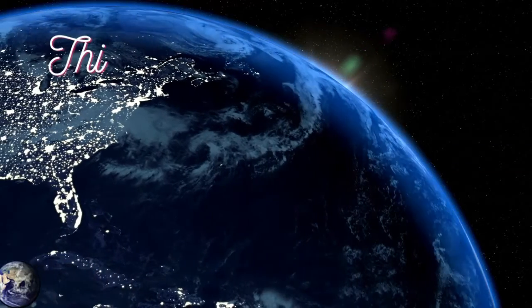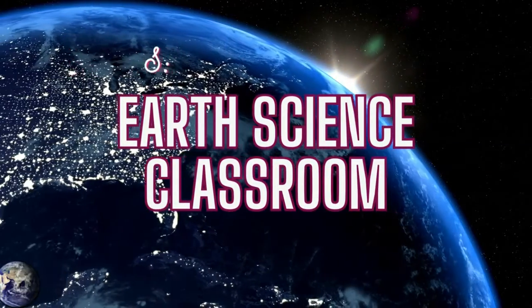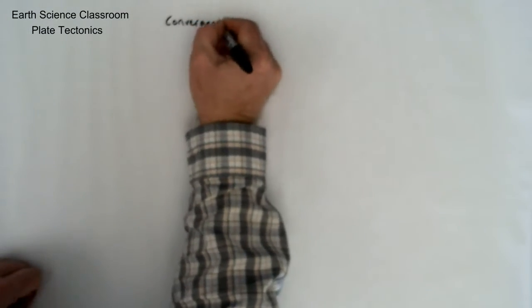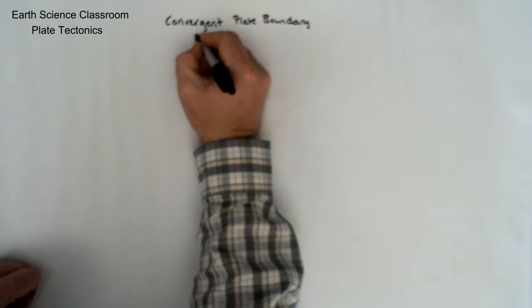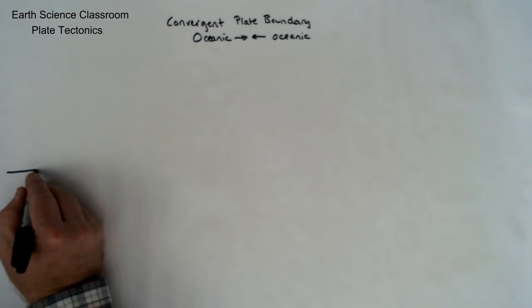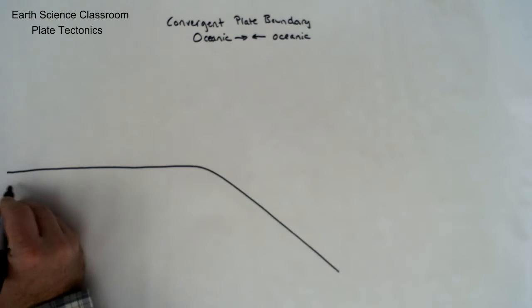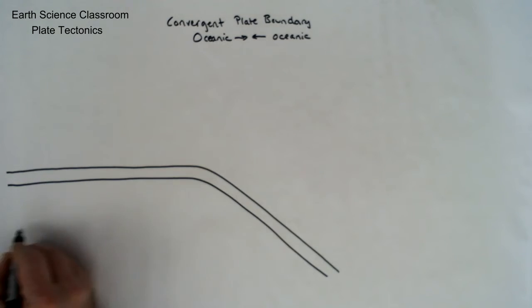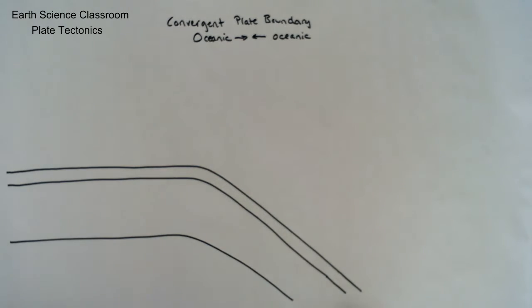This is the Earth Science Classroom. In this video we are drawing out a diagram of a convergent plate boundary, looking at the oceanic to oceanic convergence, the boundary and the margin and the features that go along with these two plates that converge and collide together.